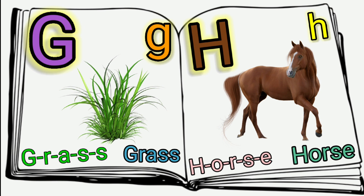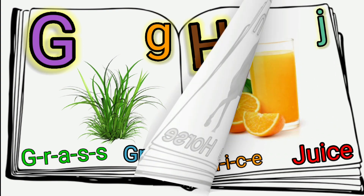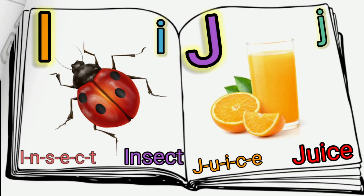H, O, R, S, E. Horse. H is Horse. I. I is Insect — I, N, S, E, C, T — Insect. I is Insect.